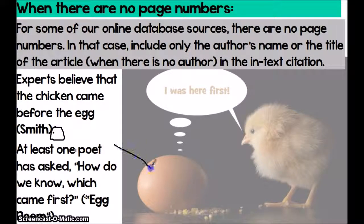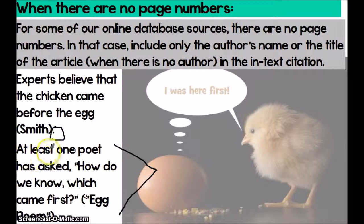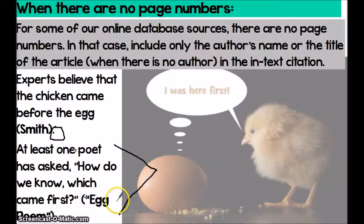Here I also have an example where I'm using a poem that I found online from an anonymous poet: 'At least one poet has asked, how do we know which came out first?' I do not have a page number or an author, so I'm just putting the title in my parentheses.